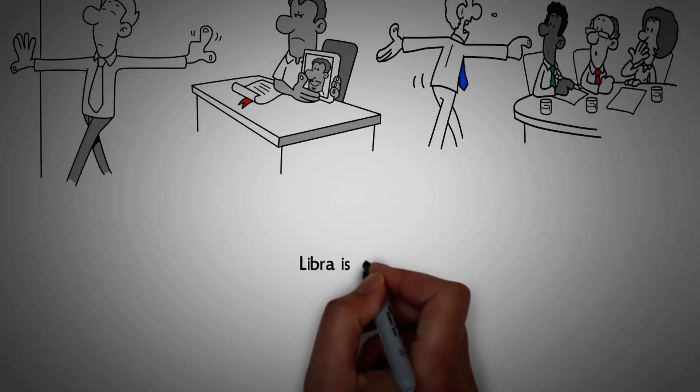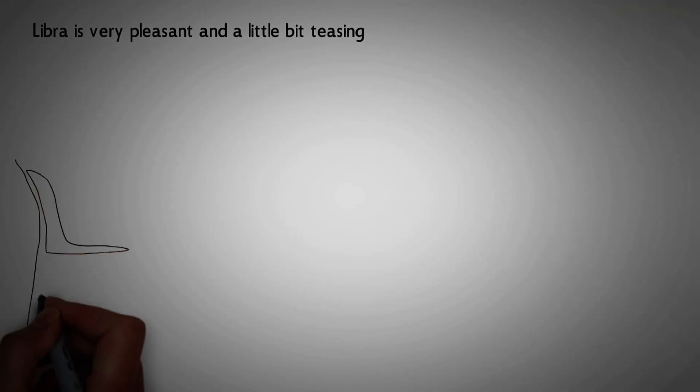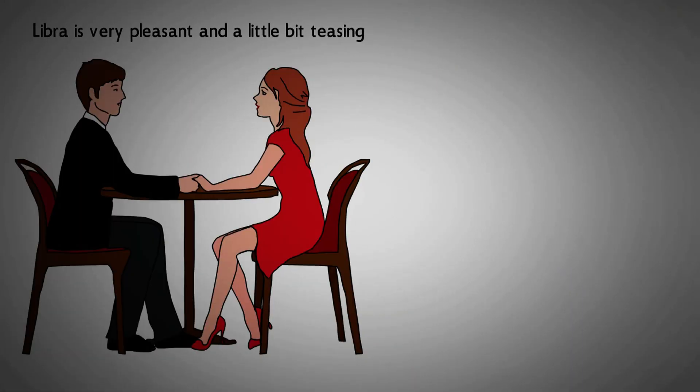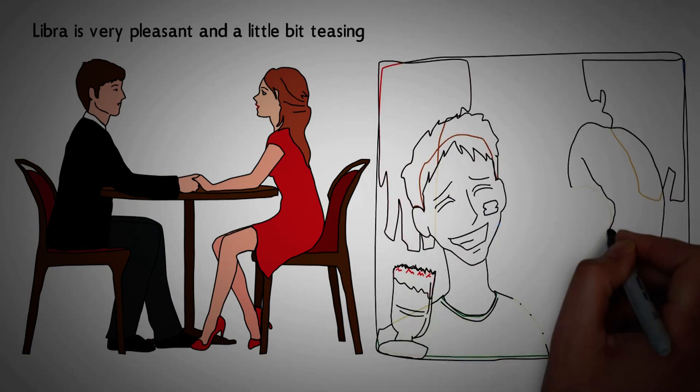Number 12. Libra is very pleasant and a little bit teasing. Libra has qualities that allow them to fascinate others, particularly when they want to arouse positive feelings. Their friendly and flirting nature makes them charming to others.